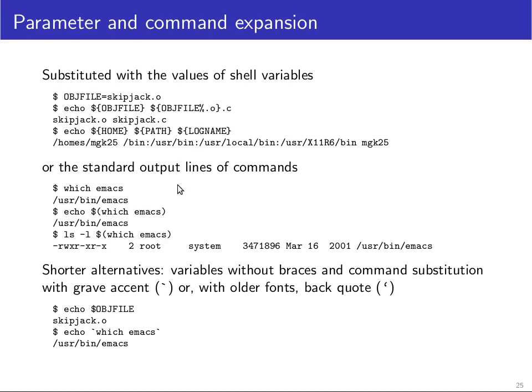There's also something called command expansion that allows you to insert the standard output of a command into a command line. As an example, let's have a look at the which command. The which command looks at where a particular command is located. So if you just type in a command such as emacs, then the shell will look in the path variable, which contains a colon separated list of directories.